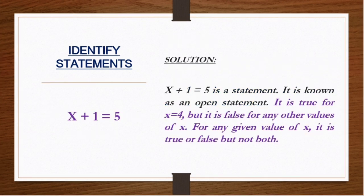Next problem: 'x plus 1 is equals to 5.' If we assign a value to x, we will know whether 5 is the result. 'x plus 1 = 5' is a statement — it is known as an open statement. It is true when x equals 4. But it becomes false when x has other values, like 1, 2, 3, 5, 6, and so on. So it could be true or it could be false, but it could not be both true and false.